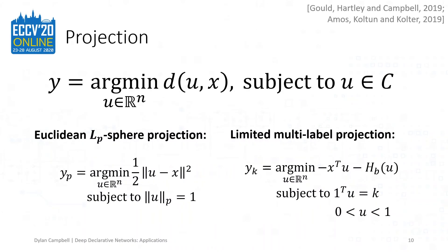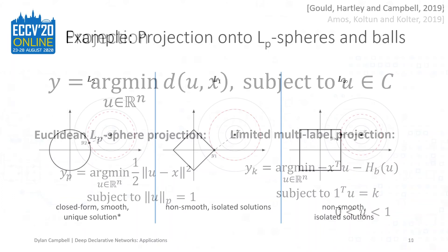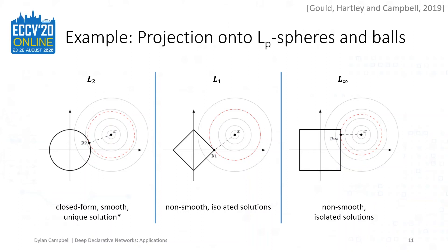Now we turn to some examples of projection, where we want to minimize some distance measure d with respect to some surface c. For example, Euclidean projection onto an LP sphere or ball, which has applications to adversarial robustness, and entropy-regularized projection onto the interior of the limited multi-label polytope, with applications to top-k classification. Here the optimization problem is to find the nearest point on the sphere or ball to the given point. Except for the L2 case, this requires an algorithm to solve, and it is a non-convex equality-constrained declarative node. We've seen improvements in image classification by using different projections, and have ongoing work showing robustness to adversarial attack using these projections.